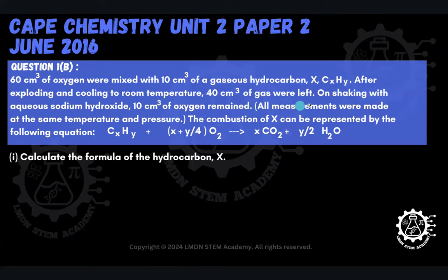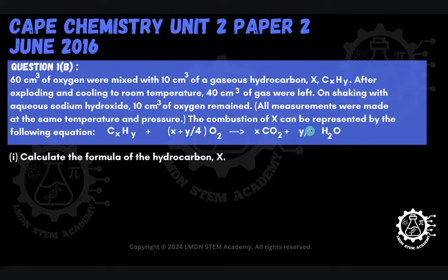All measurements were made at the same temperature and pressure. The combustion of X can be represented by the following equation: CₓHᵧ plus (X + Y/4) O₂ forms X moles of carbon dioxide plus Y/2 moles of steam.